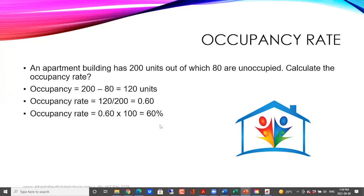So they are basically the two sides of the same coin. Occupancy in this case is 60% and vacancy is 40%, so there's a high rate of vacancy in this building. Anytime we are dealing with apartment buildings or multi-unit buildings, we have to look at occupancy and vacancy rate, and this is how we do that.